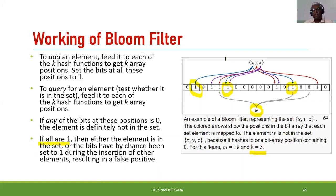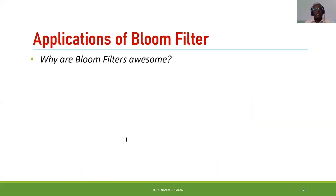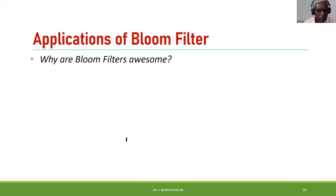If all three bits are 1, then the element is definitely present — which would be the case for x, y, or z if those were the keys being searched. That is the advantage of the Bloom filter: memory efficient and faster. You don't require a lookup table or time-consuming searching.